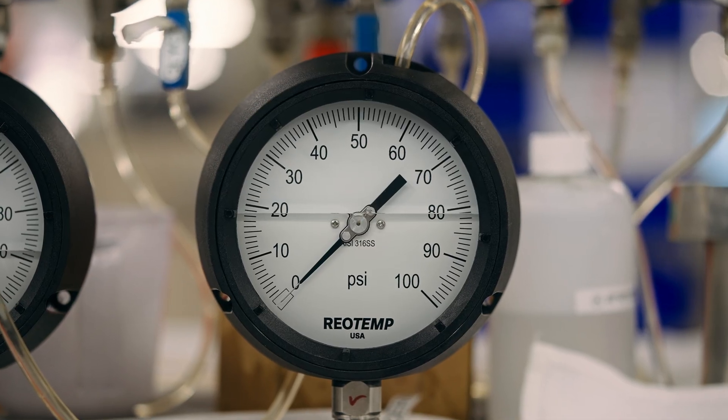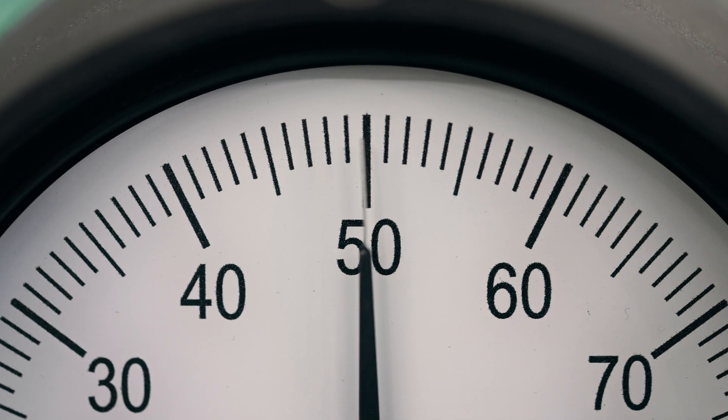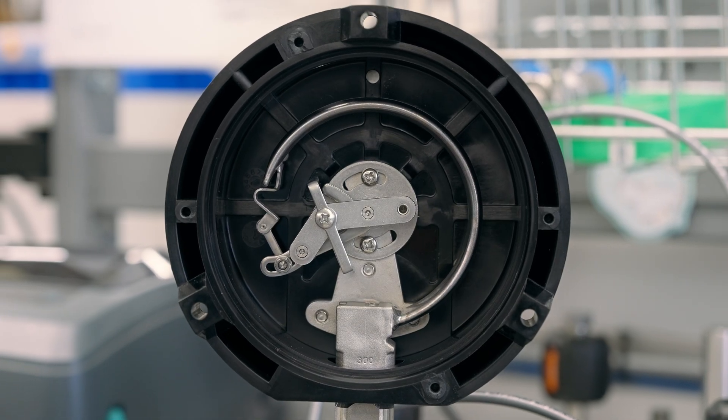Why do pressure gauges need to be liquid filled? Liquid filled pressure gauges are essential for dampening mechanical vibrations, particularly in environments prone to high levels of vibrations and pulsations. Additionally, the liquid lubricates internal components, enhancing longevity and accuracy.